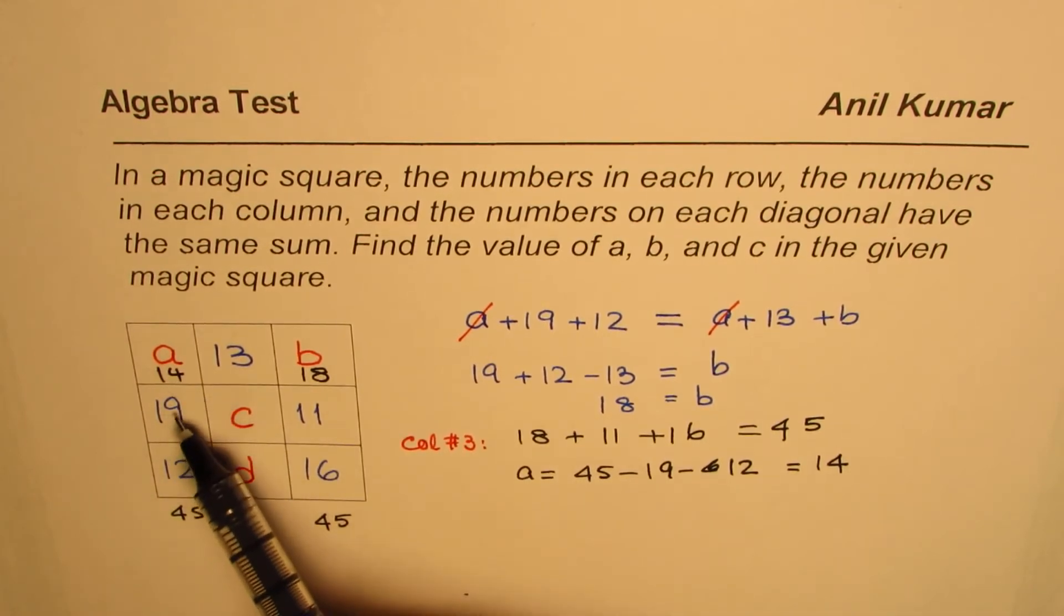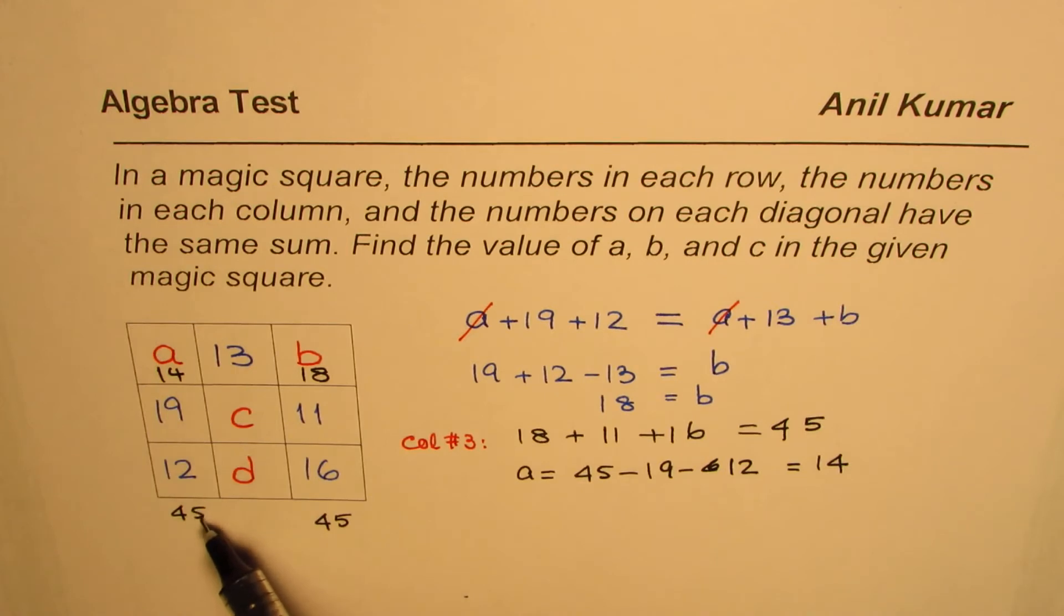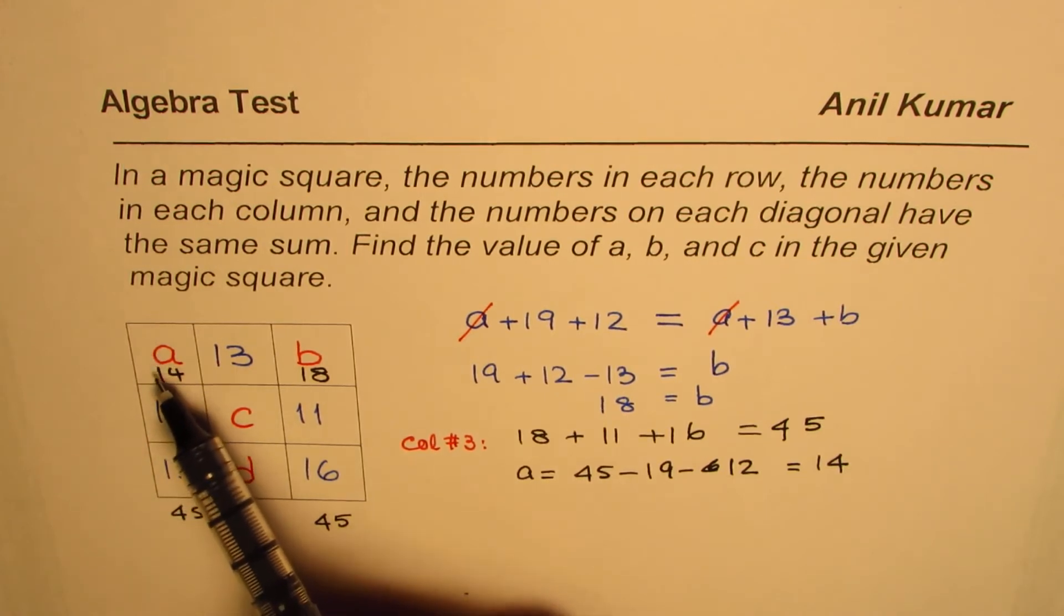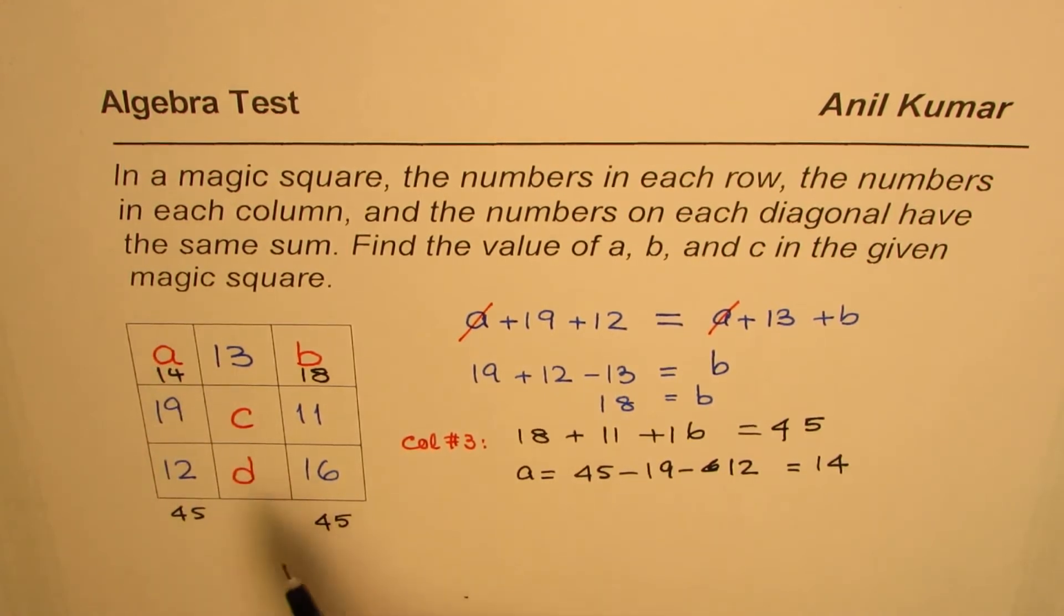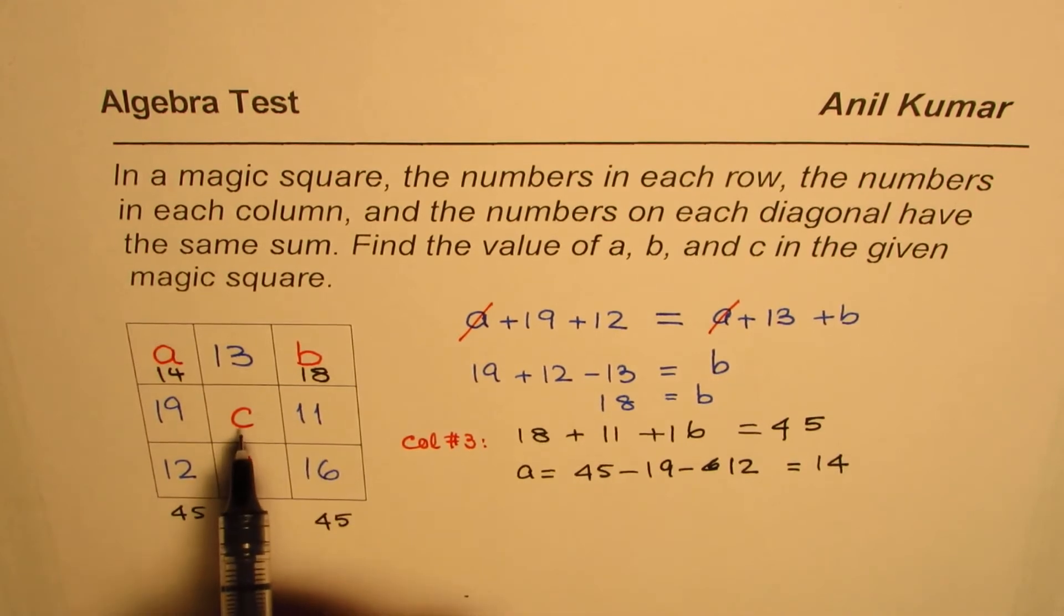4 plus 9 is 13, plus 2 is 15. We get 5, 1 carry. So we get 45. Now we can find the value of C.